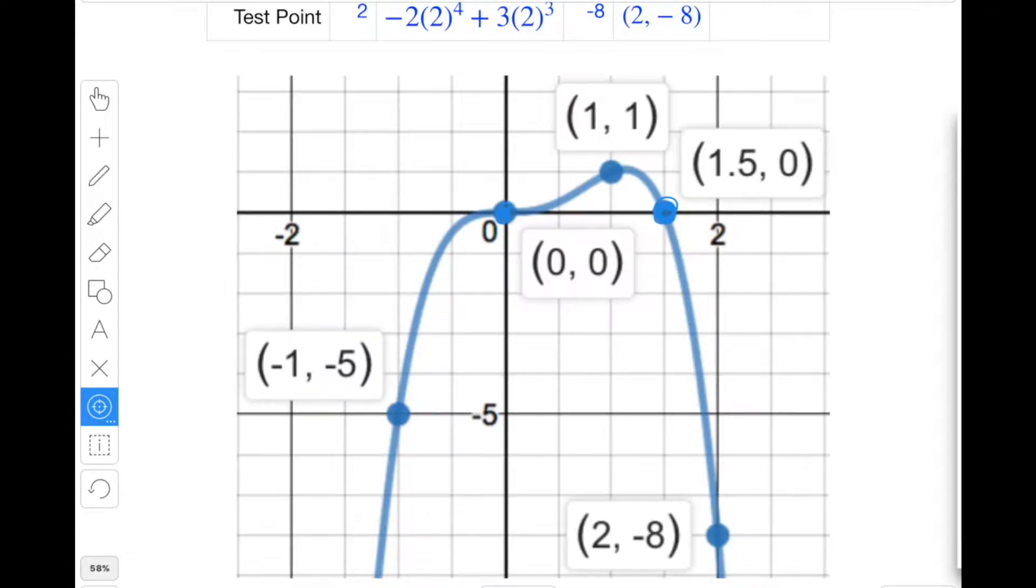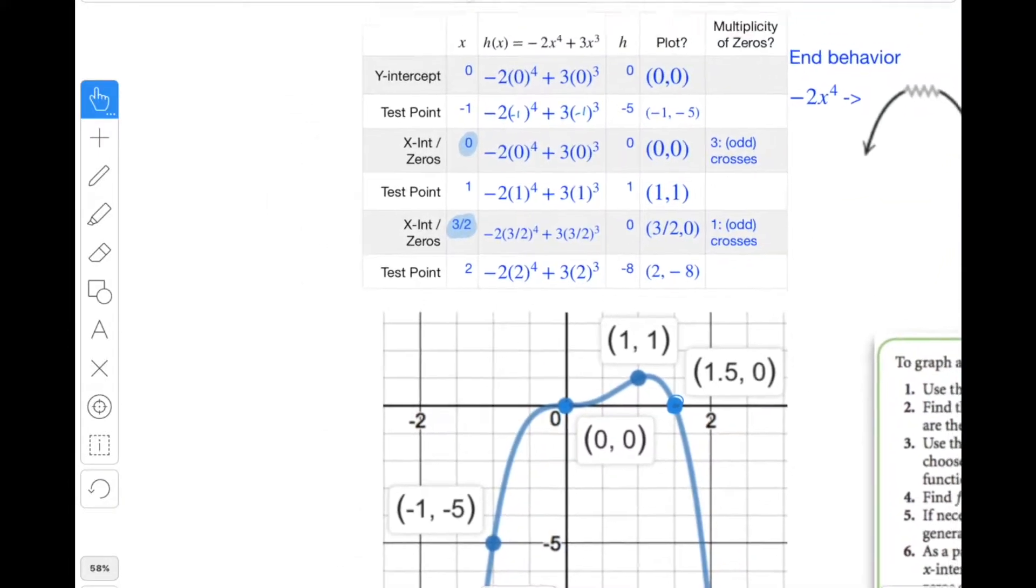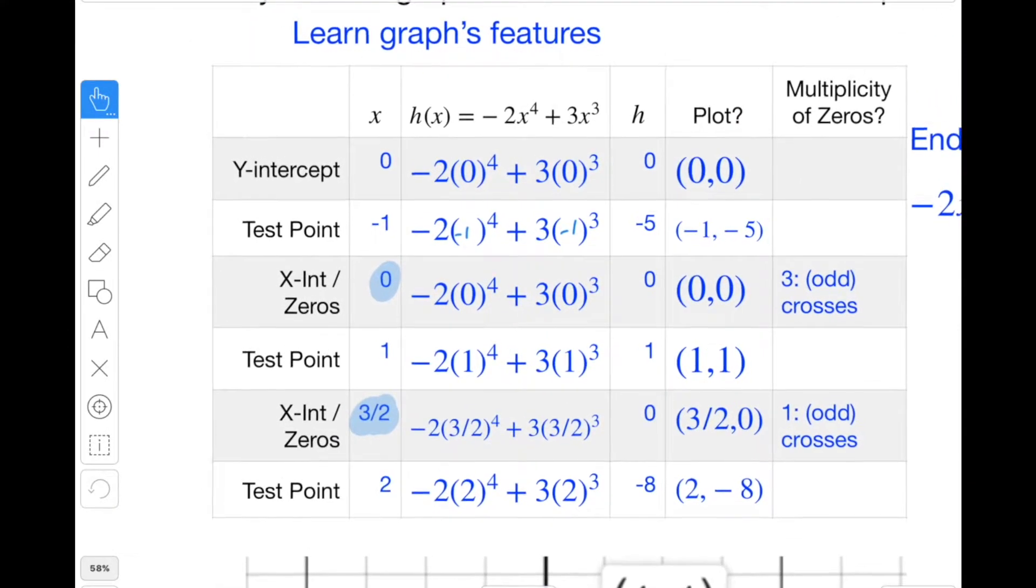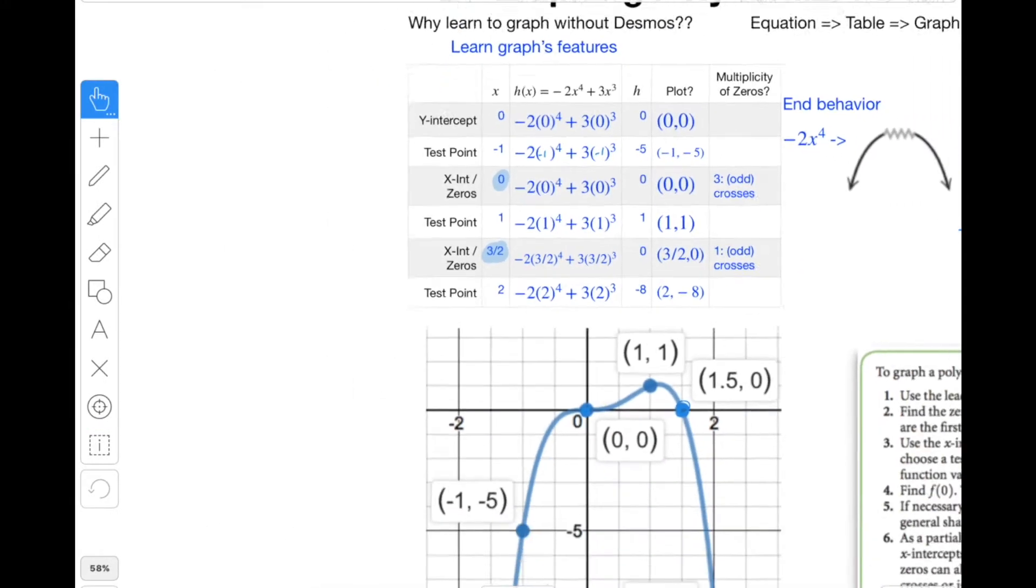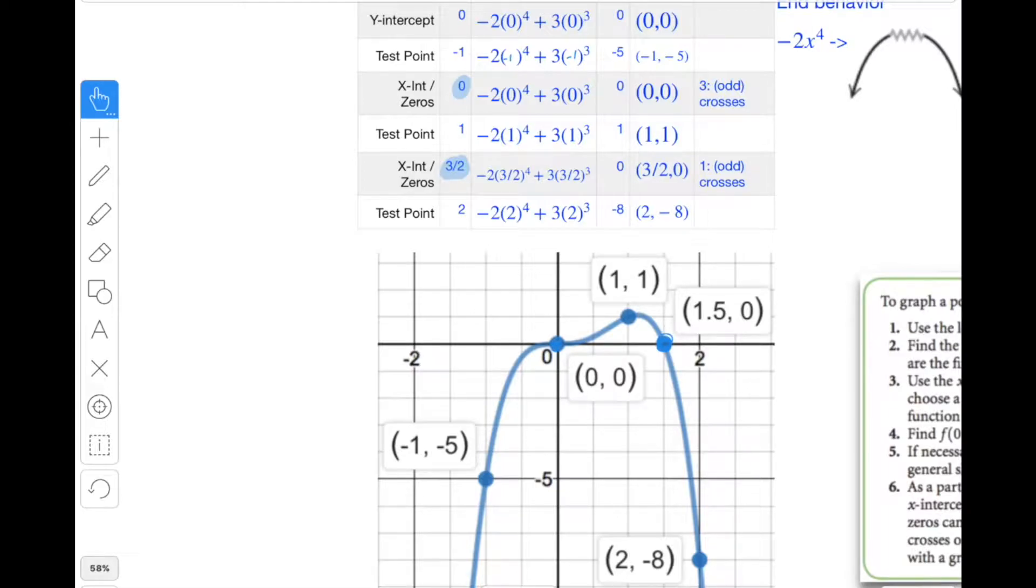Then we can take some more test points. And the test points kind of surround the x-intercepts and the zeros. You take one test point over here to the left of zero, then one test point in the middle, and then one test point over here. And when you actually plug them into the function h, you get more points that you can graph here.